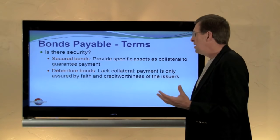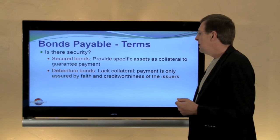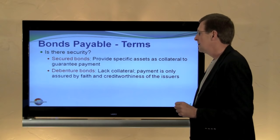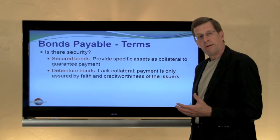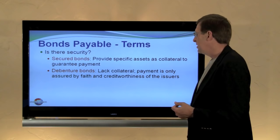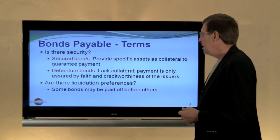Another issue is whether the bonds are secured. A secured bond is one where not only do you have the promise of the company's repayment, but the repayment is tied to specific assets as a guarantee of that payment — some particular group of assets is earmarked or designated to secure payment of the bond. A debenture bond, probably more typical, is one that is simply tied to the general faith and credit of the company. There is no specific security; it's based on the creditworthiness and the character and integrity of the company.